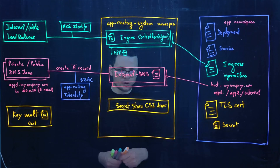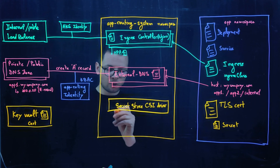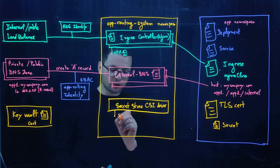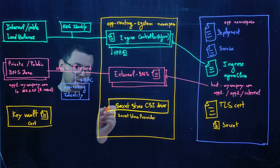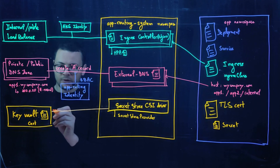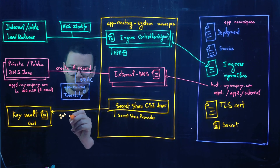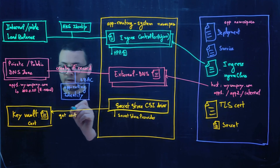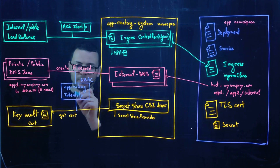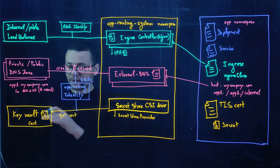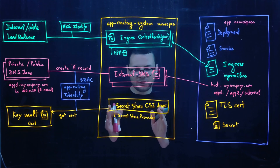The Application Routing add-on uses the Secret Store CSI Driver — an open-source CNCF project developed by Microsoft — which provides a driver for Azure Key Vault. The Secret Store CSI Driver uses a configuration called a SecretProviderClass that references the Azure Key Vault and the specific secret. It connects to Key Vault, retrieves the certificate, and brings it into the application namespace. It uses the app routing identity, which must have the Key Vault Certificate User RBAC role.